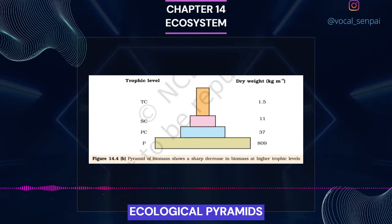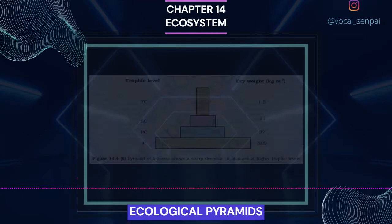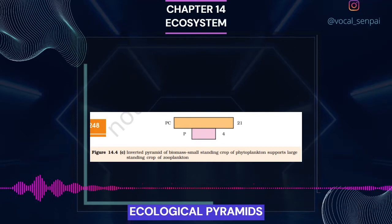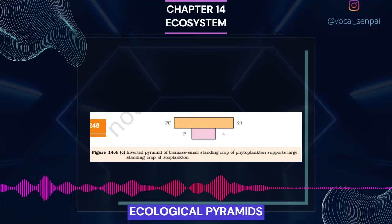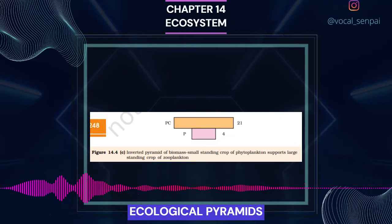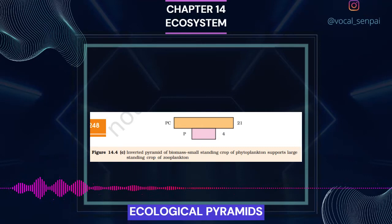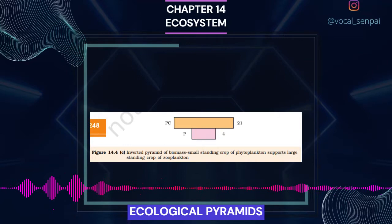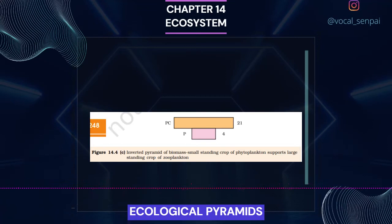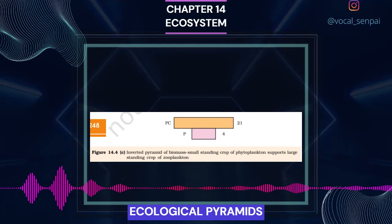In most ecosystems, all the pyramids of number, of energy, and biomass are upright, i.e. producers are more in number and biomass than the herbivores, and herbivores are more in number and biomass than the carnivores. Also, energy at a lower trophic level is always more than at a higher level. There are exceptions to this generalization. The pyramid of biomass in sea is generally inverted because the biomass of fishes far exceeds that of phytoplankton.